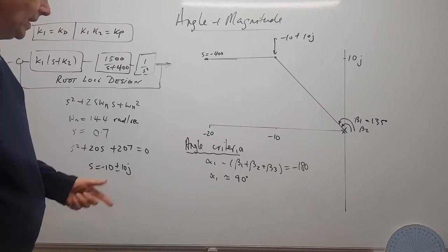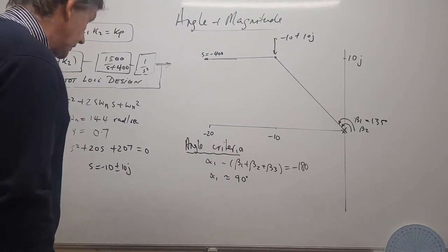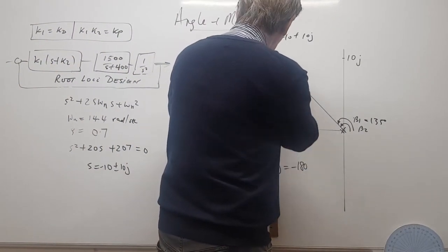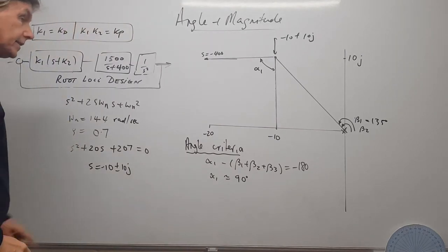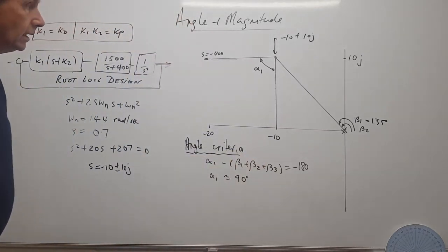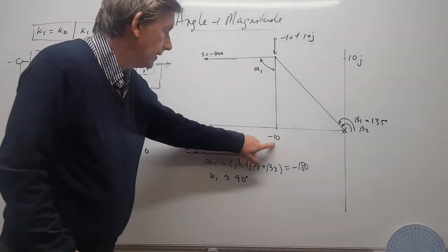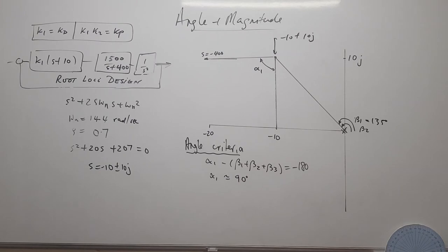Since α1 is 90°, the zero lies directly below the design point, cutting the real axis at −10. That means k2 = 10. This result came out remarkably cleanly.